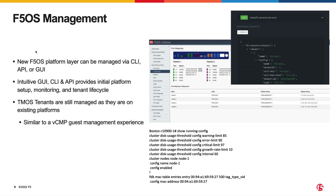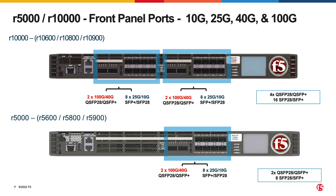The R-Series appliances come with a fully automatable F5OS API and automation toolchain. Tenants running on F5OS can be managed just as they were on previous platforms. The R-Series appliances come in four major variants: the R-10000, the R-5000, the R-4000, and R-2000 models.